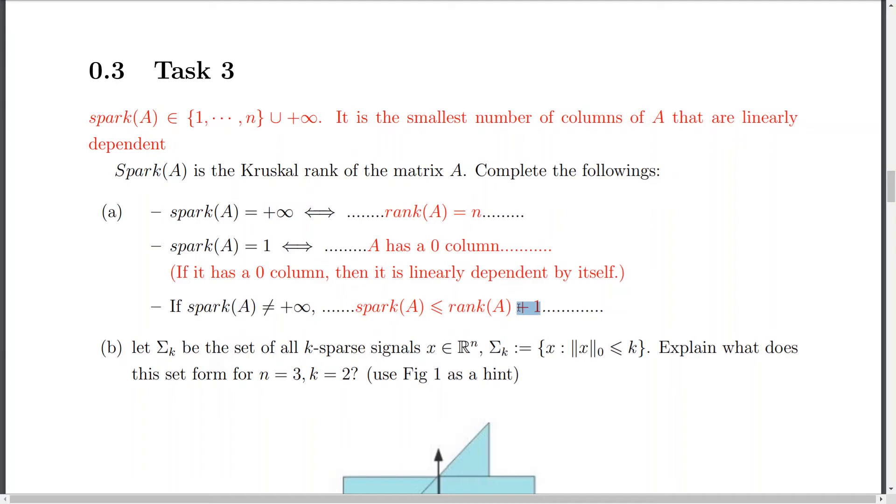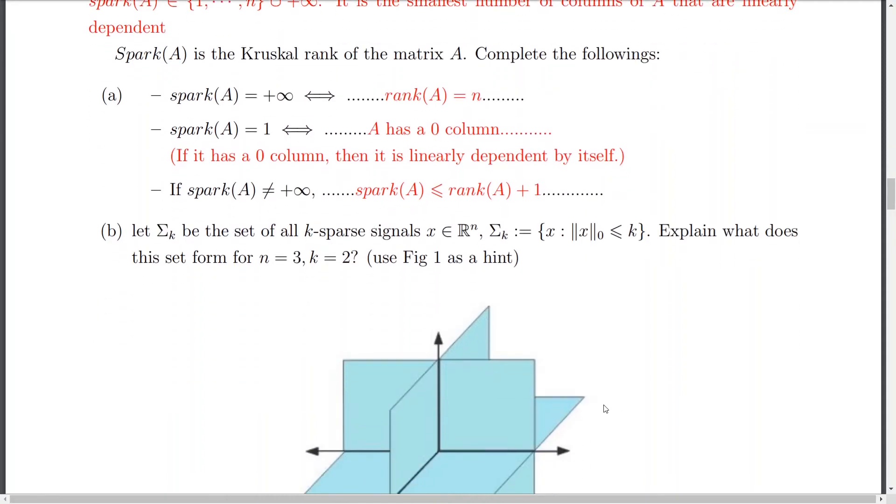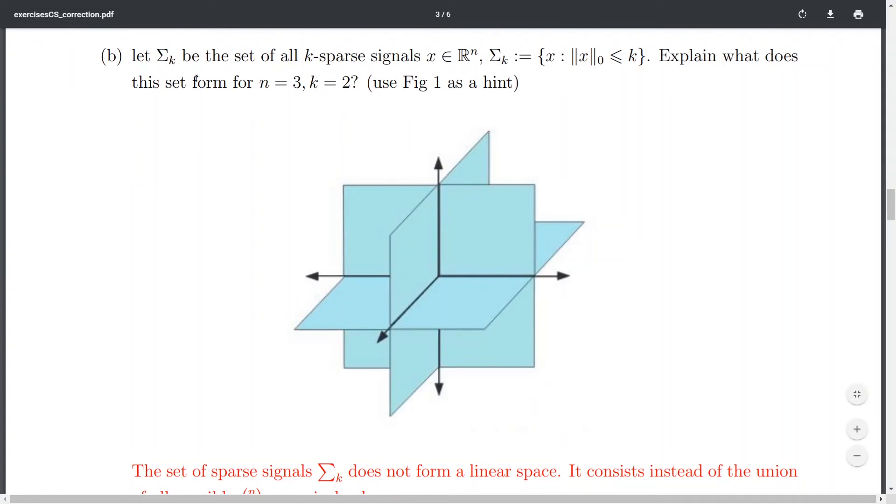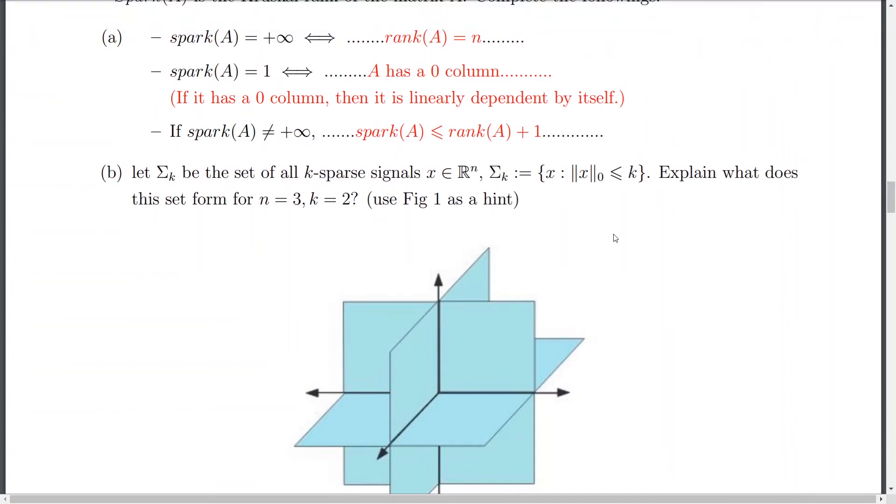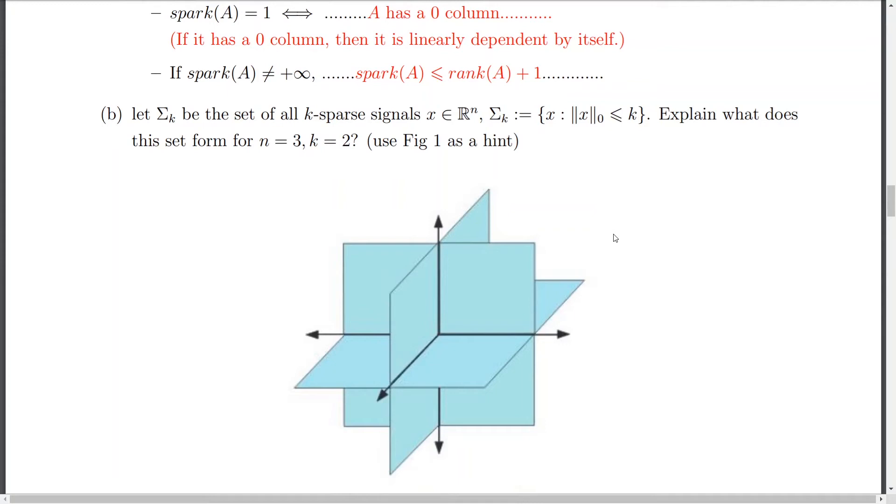Yeah, and I mean, they are integers. So, it should be like smaller than this rank. And the plus one to get the tight, not to say it in English. Yeah, the tight form in my inequality. So, now, B, let's sigma k be the set of all k-sparse signals x in Rn, where we define this sigma k as the vectors x such that their zero norm is smaller or equal than k.